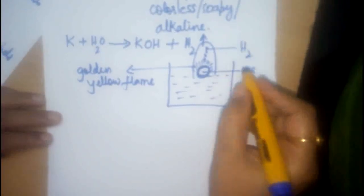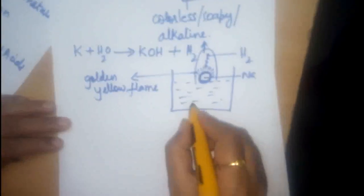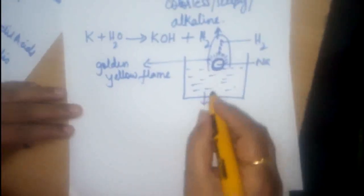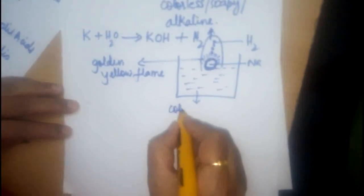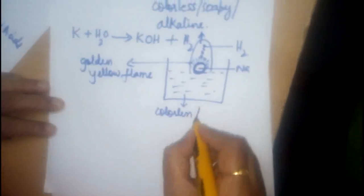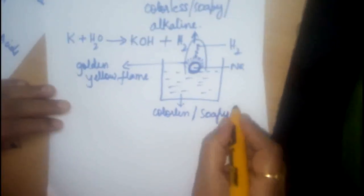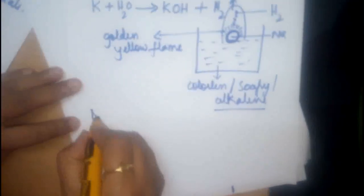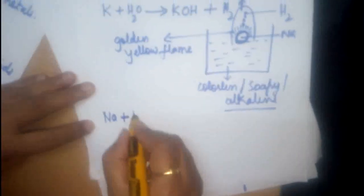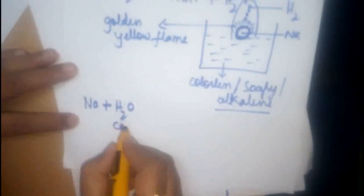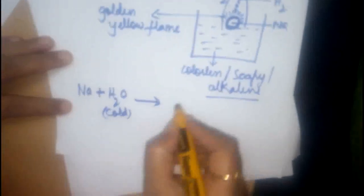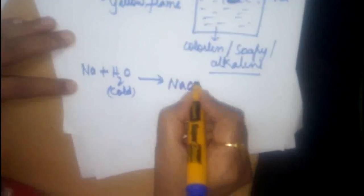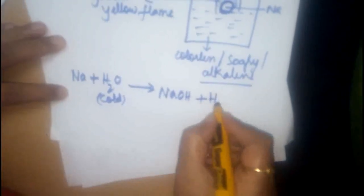You will come to know the bubbles there. It is hydrogen gas. And the solution, which is present in the beaker, it is a colourless, soapy and alkaline. Very important, alkaline. And the reaction, something goes like this. Sodium reacts with water. And what is the condition of water? Cold. It forms sodium hydroxide, which is alkaline in nature. And we also see the hydrogen gas, which is evolved.